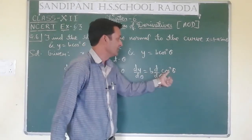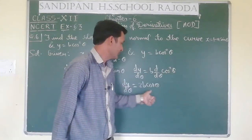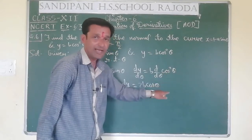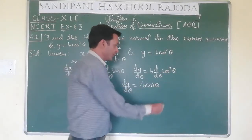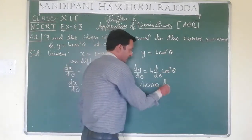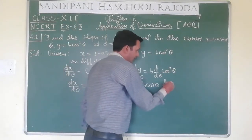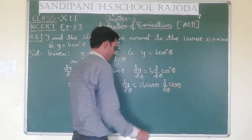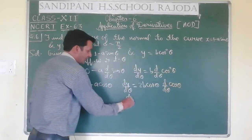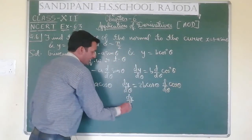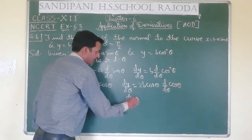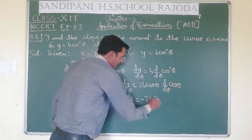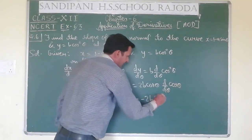We treat cosθ as t, so the differentiation of t² is 2t — but it is not just t, it is cosθ. So we have to differentiate cosθ again with respect to θ. Therefore dy/dθ = -2b sinθ cosθ.